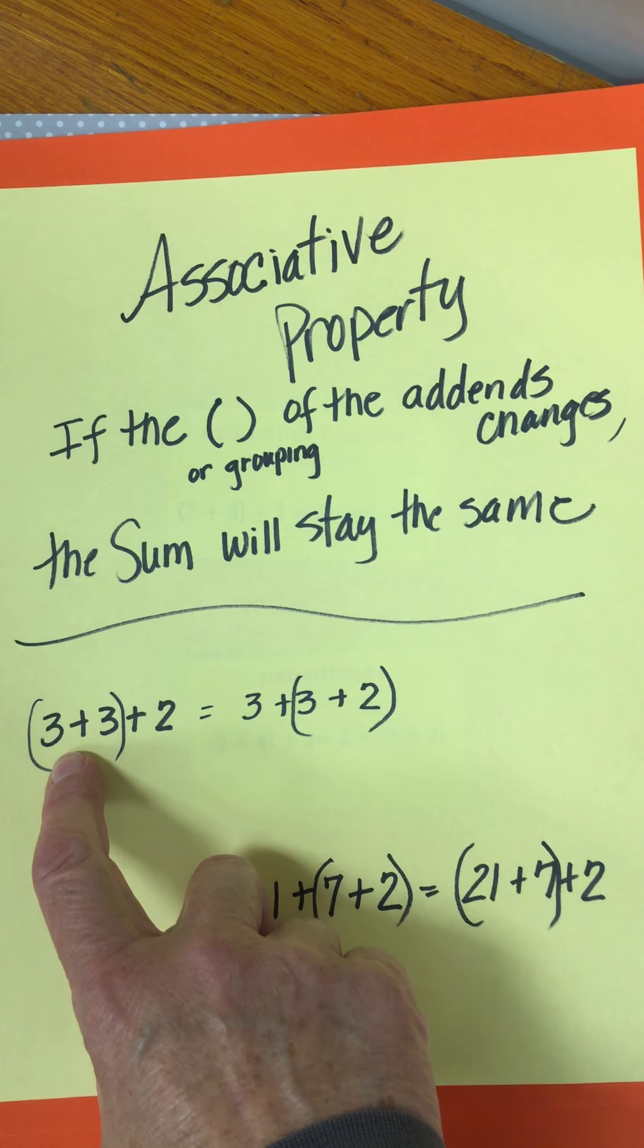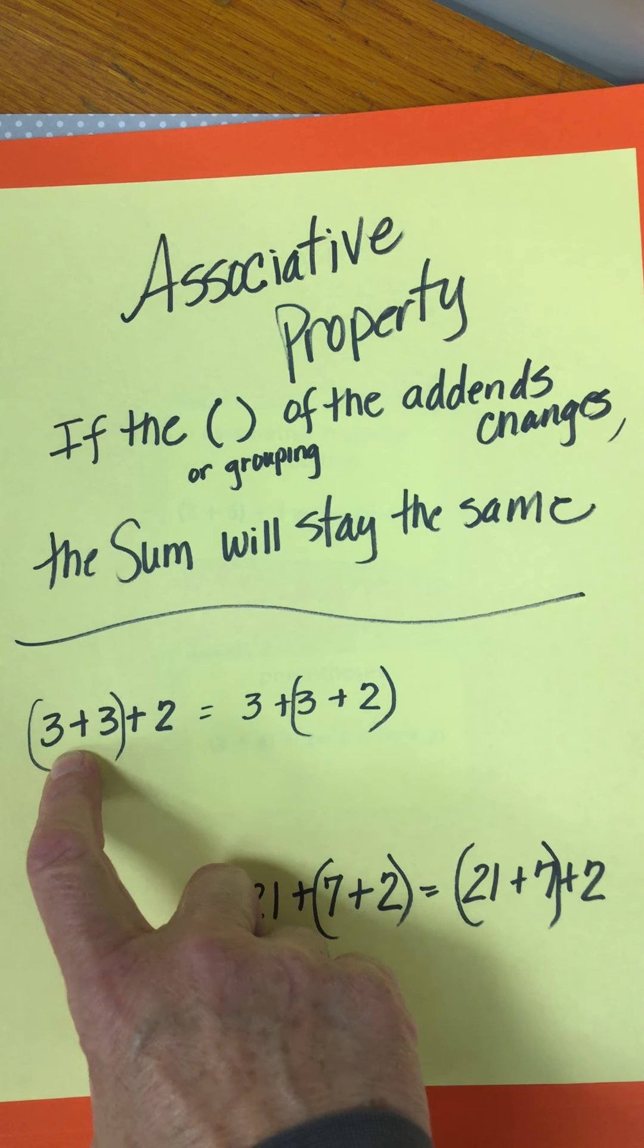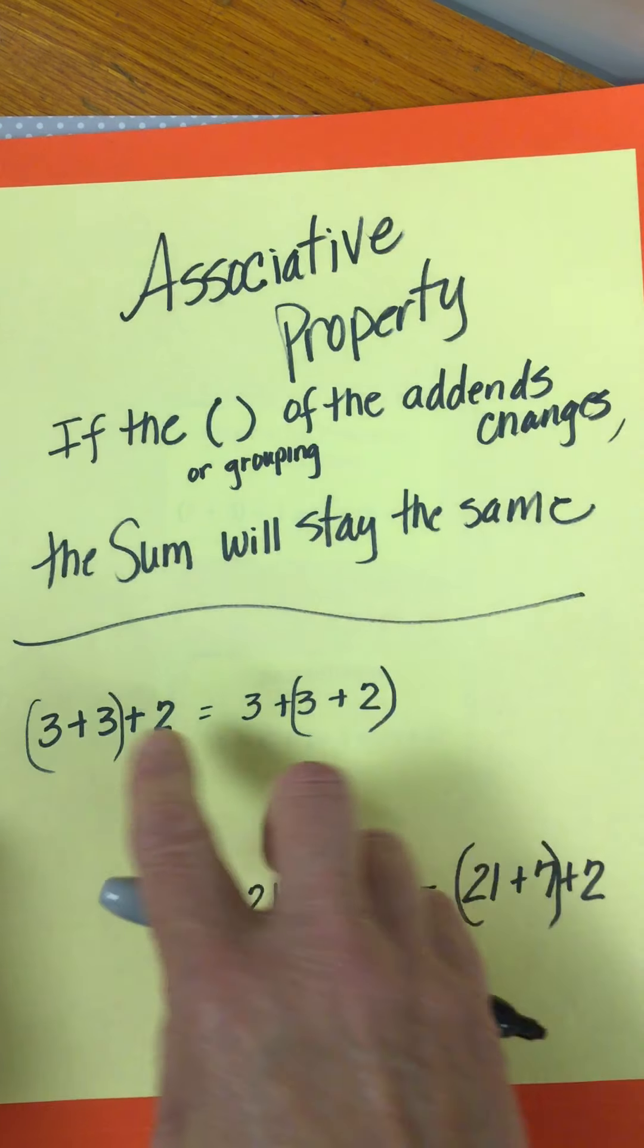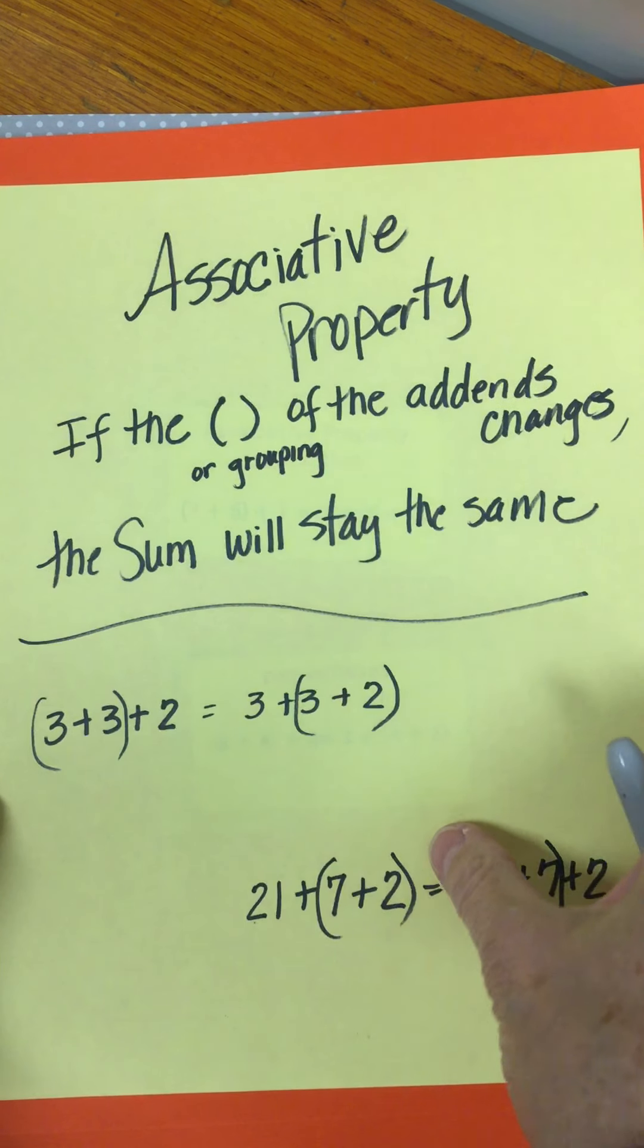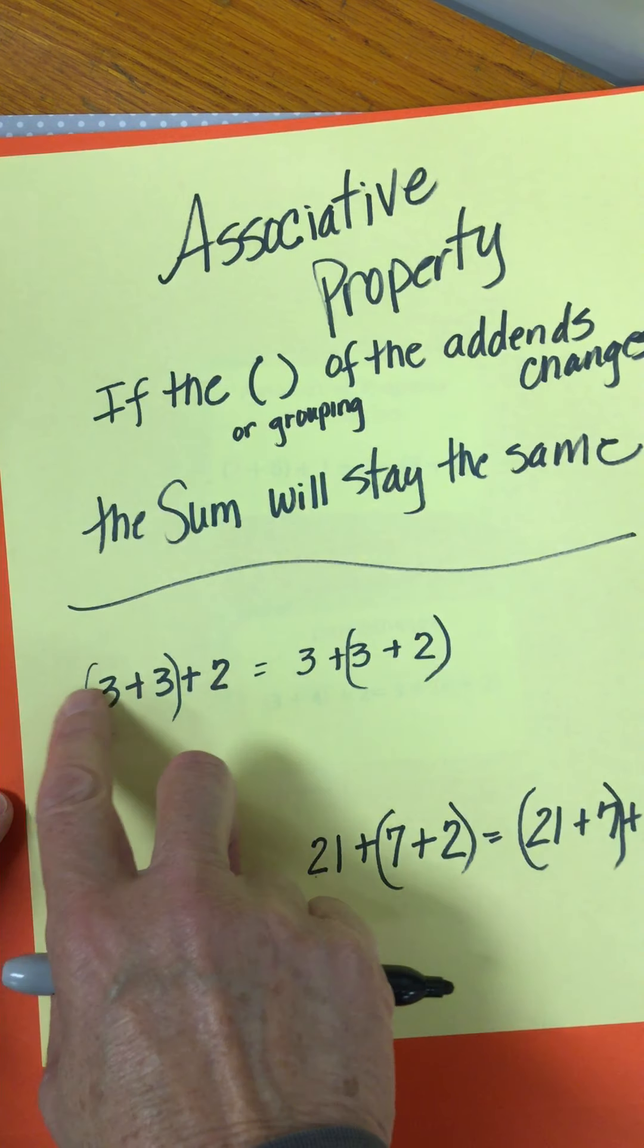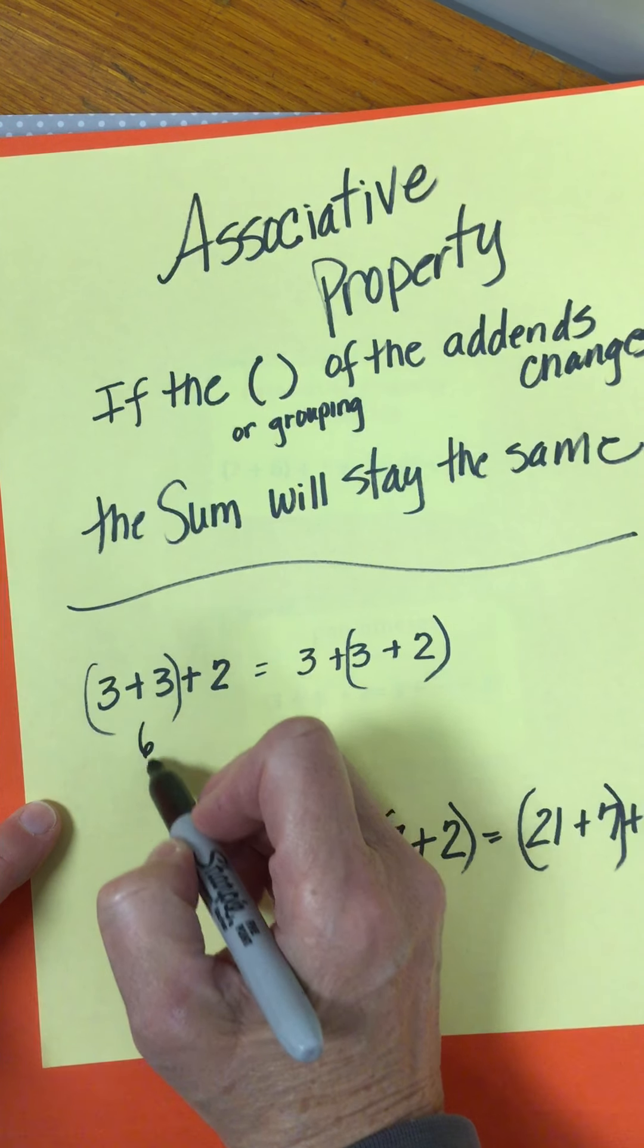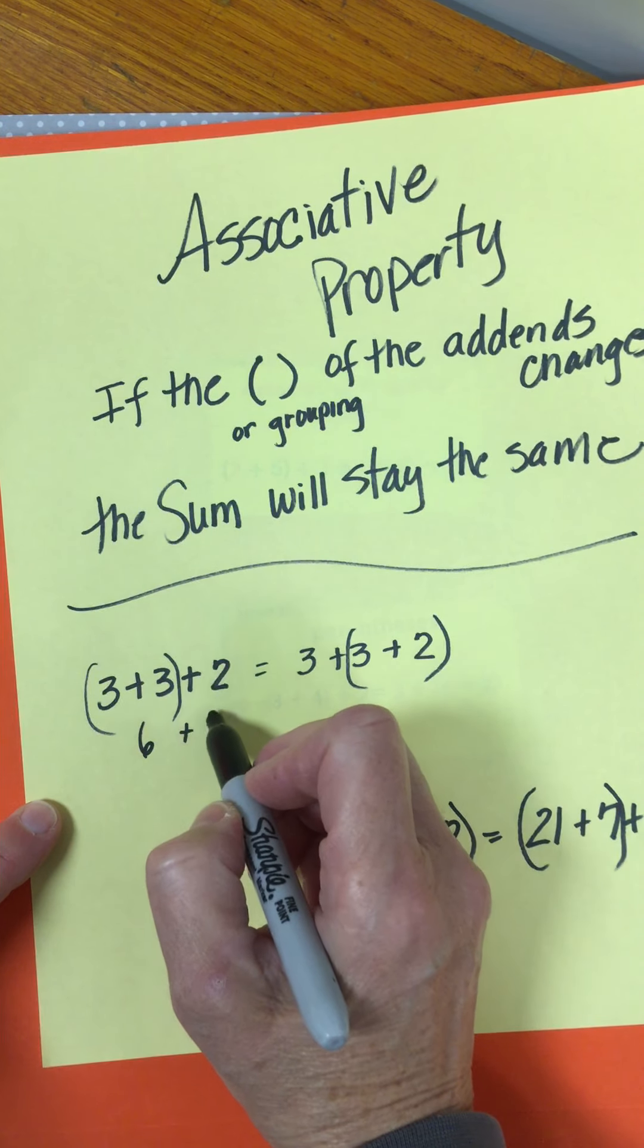So here I put the parentheses at the beginning of the problem and over here I put them at the end. So let's work them out. 3 plus 3, you always got to do the parentheses first. So 3 plus 3, well I know that is 6, so I bring that down and I'm going to add that to the 2.